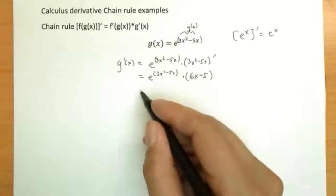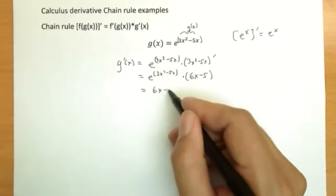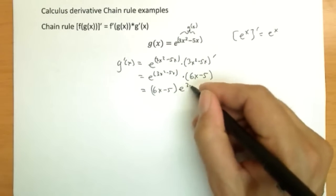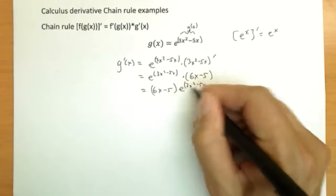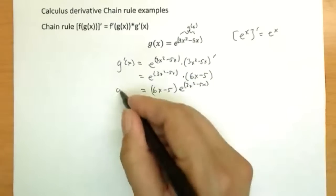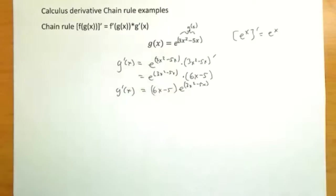Might see it reversed: 6x minus 5 times e to the 3x squared minus 5x. Well, multiplication is commutative, so who cares? Can reverse it if we like. And that is our second example of the chain rule for taking a calculus derivative.